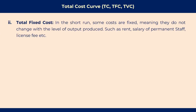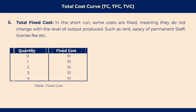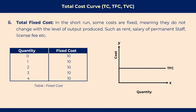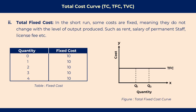The second curve of the total cost curve is total fixed cost. Total fixed cost is the cost which does not change with the change in quantity of output, such as rent, salary of permanent staff, and license fees. In the table, we can see that output is increasing but fixed cost is not changing. To draw the graph, we take quantity on the x-axis and cost on the y-axis. The total fixed cost is parallel to the x-axis. When production is zero, there exists a fixed cost. When we produce q1 or q2 units, the fixed cost remains the same — no matter how many units we produce, total fixed cost remains the same.